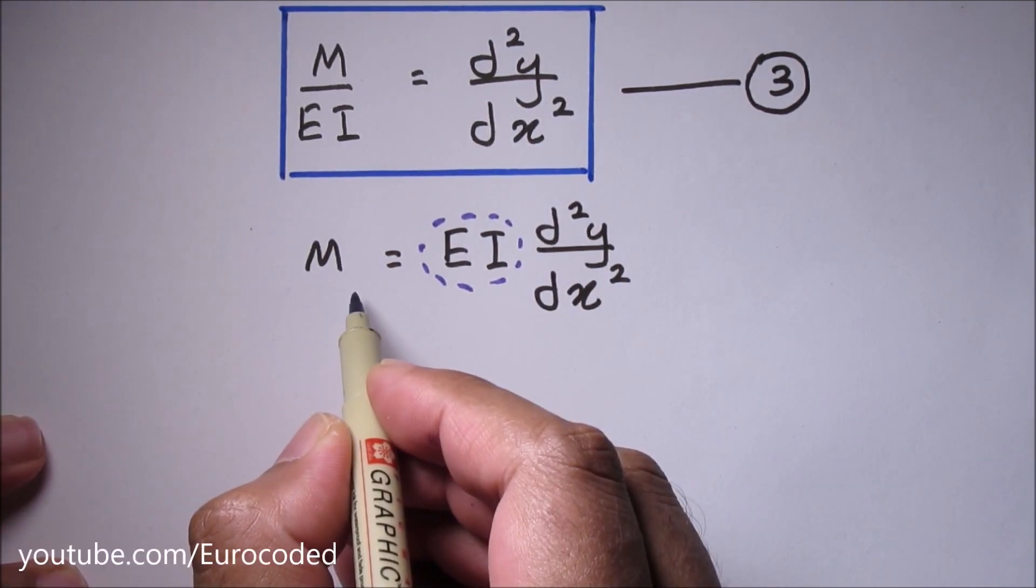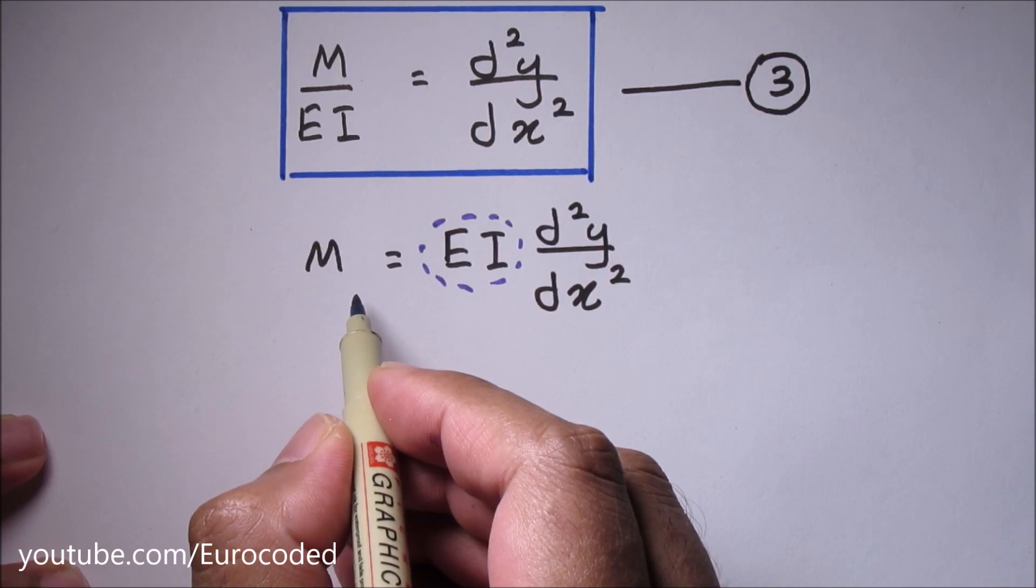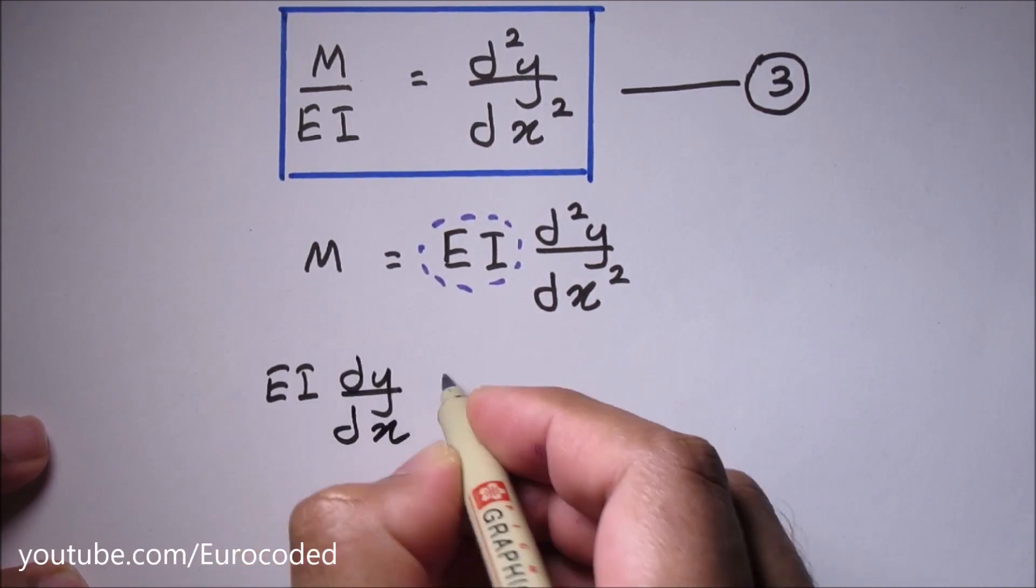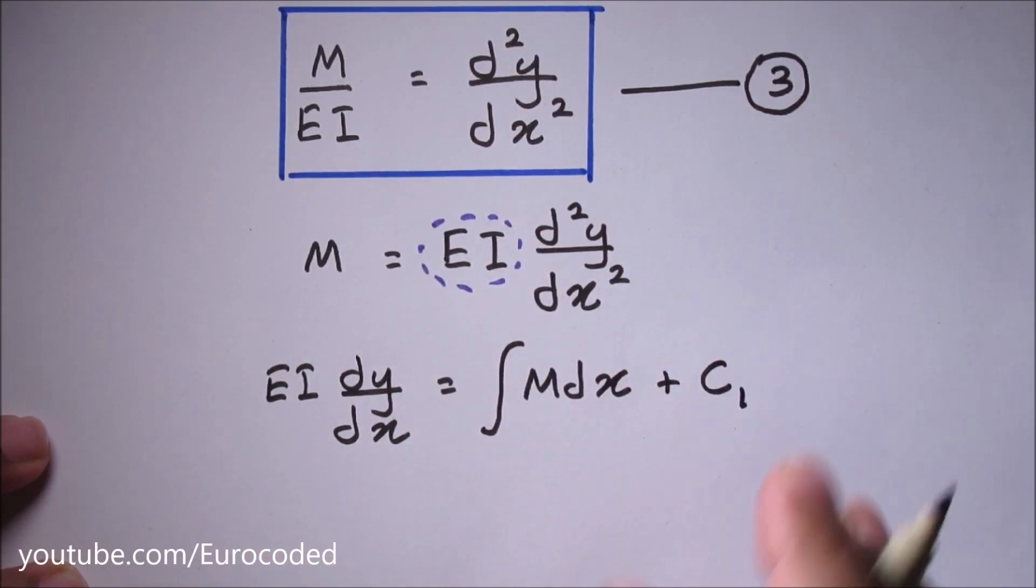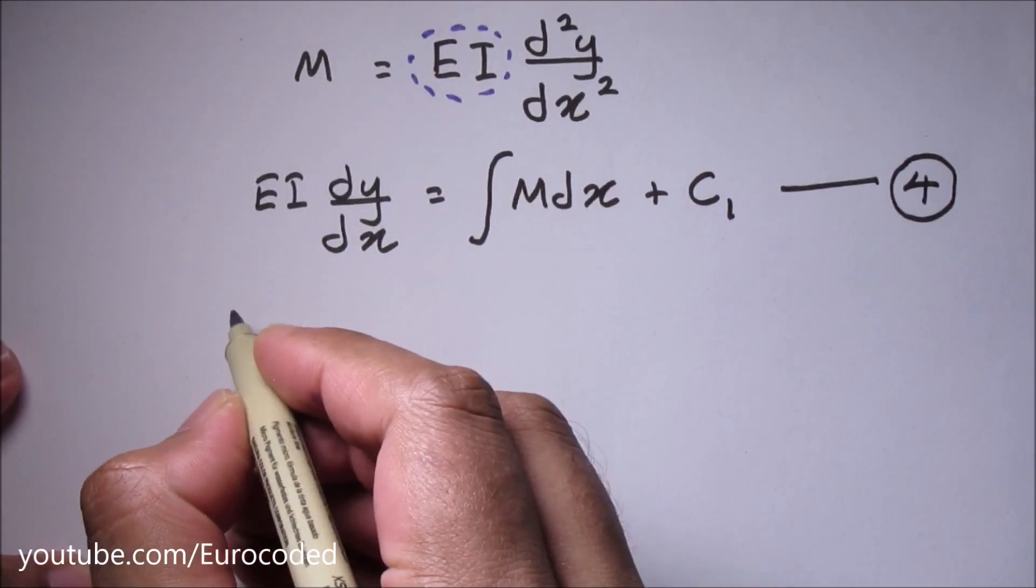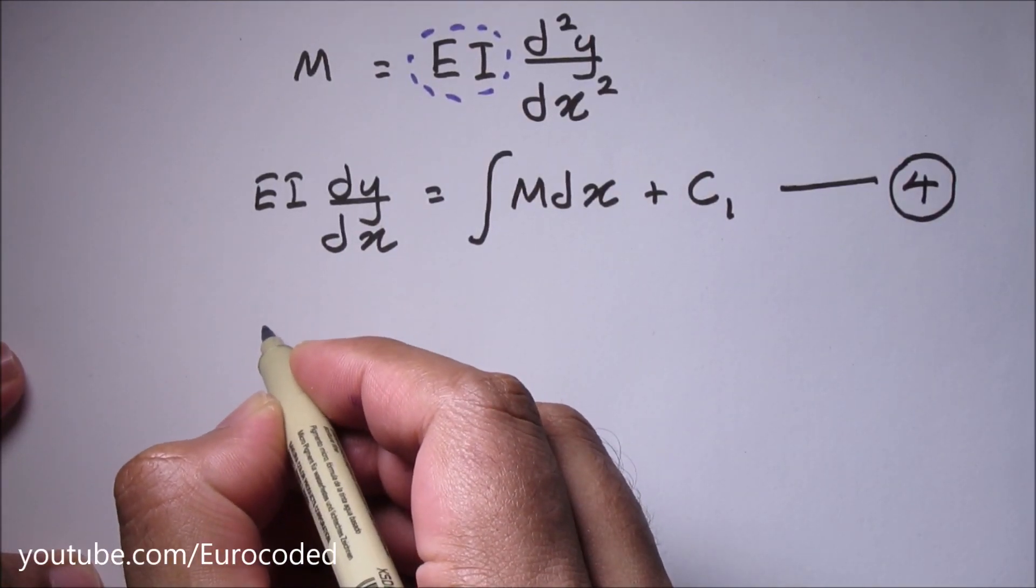M is a function of x and the integration of the equation gives us EI dy over dx equals integral M dx plus C1. Let's call this equation 4. A second integration gives us EI y equals double integral M dx dx plus C1 x plus C2.